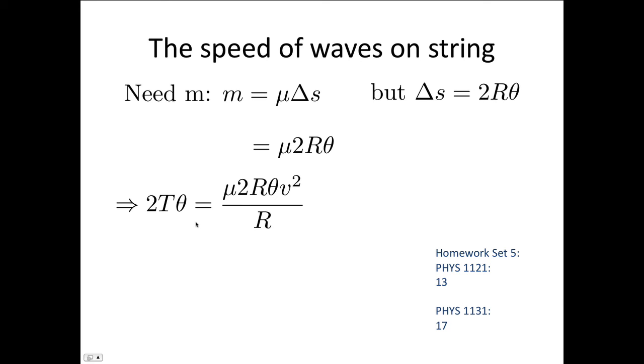Now there's lots of things we can cancel out. We can cancel out our thetas. We can cancel out the 2s. We can cancel out the Rs. And when we do that, we're left with the expression T is equal to mu, the mass per unit length, times the velocity squared. So we can rearrange that to write that the velocity is equal to the square root of the tension over the mass per unit length. Now you'll be using this formula quite a lot. And this will come up in the standing waves on the string experiment in the laboratory.